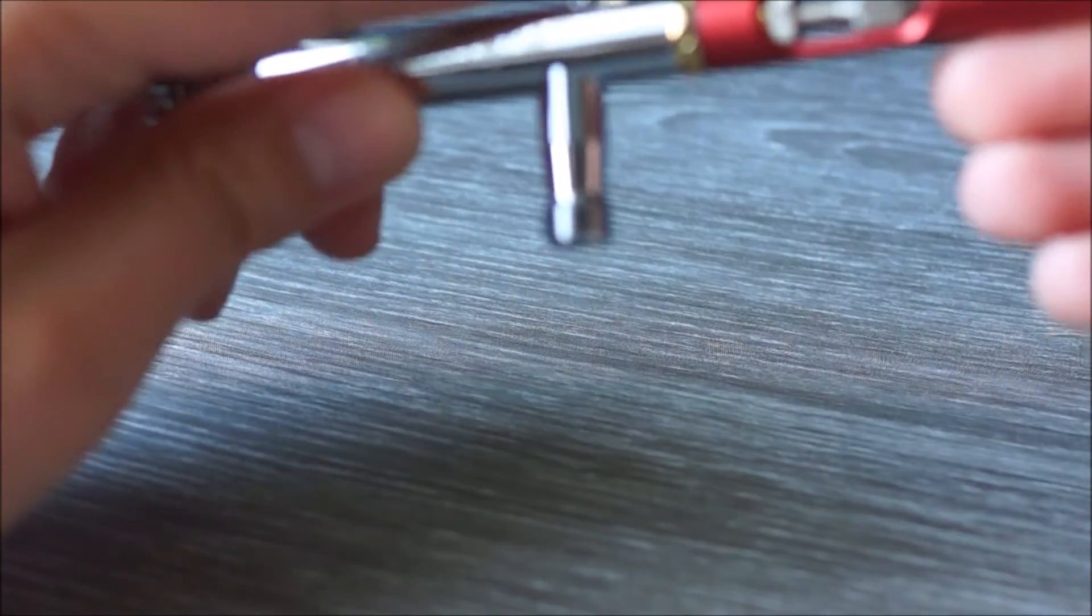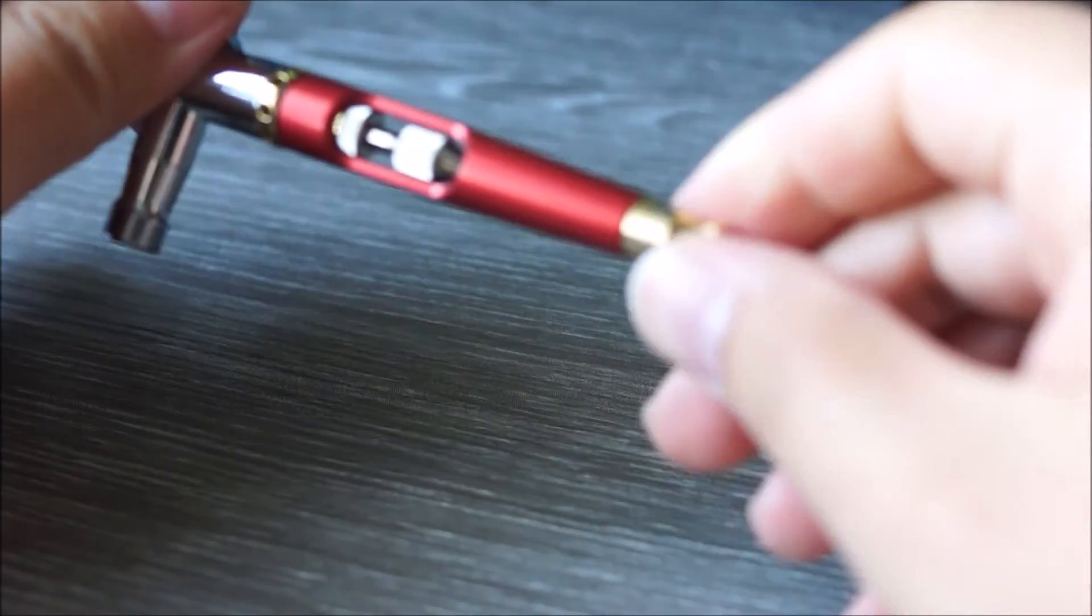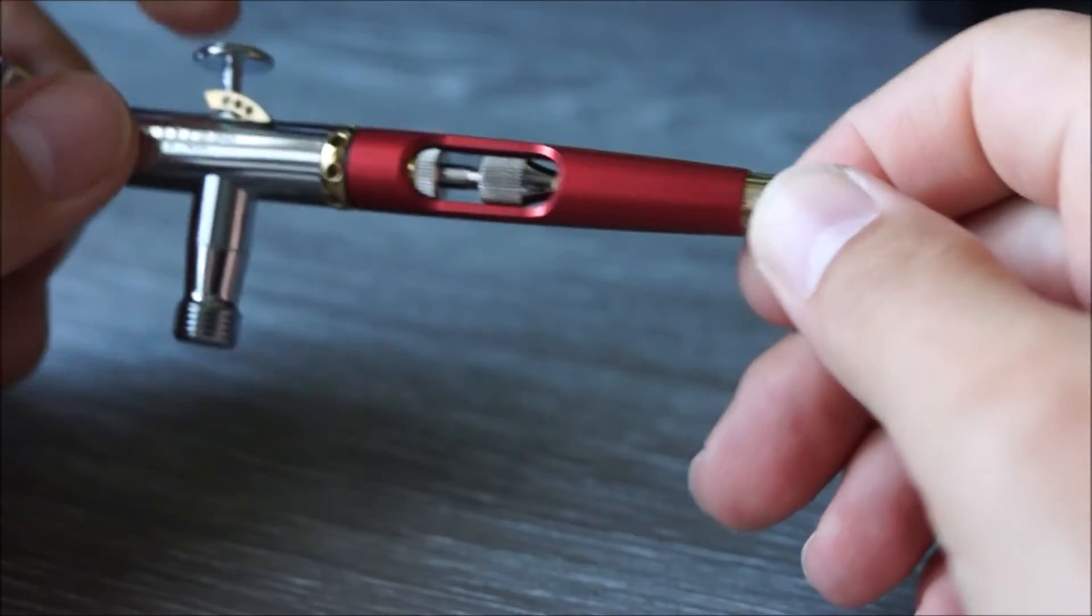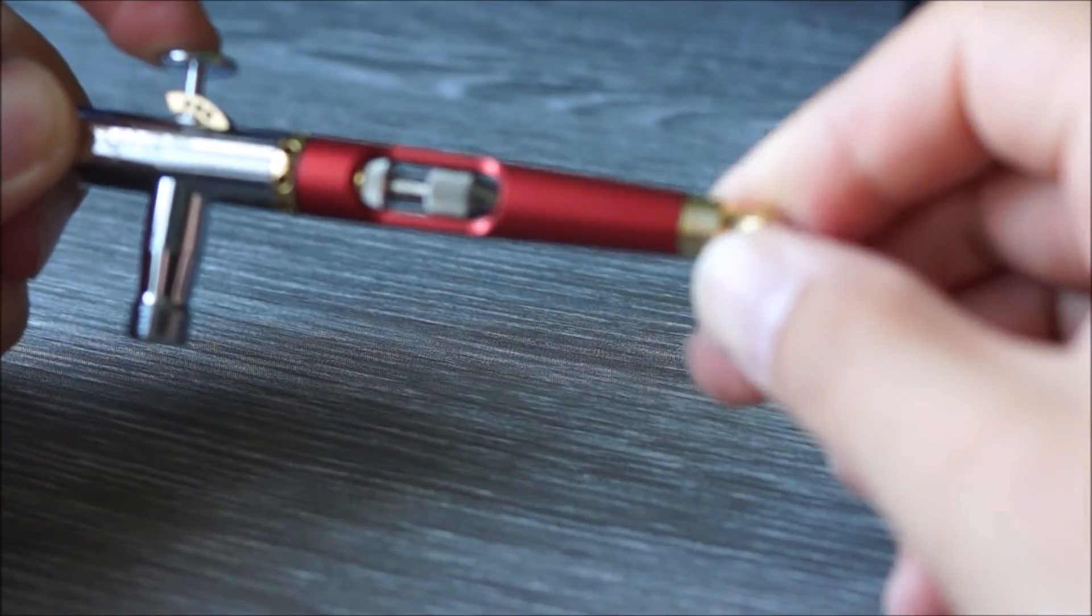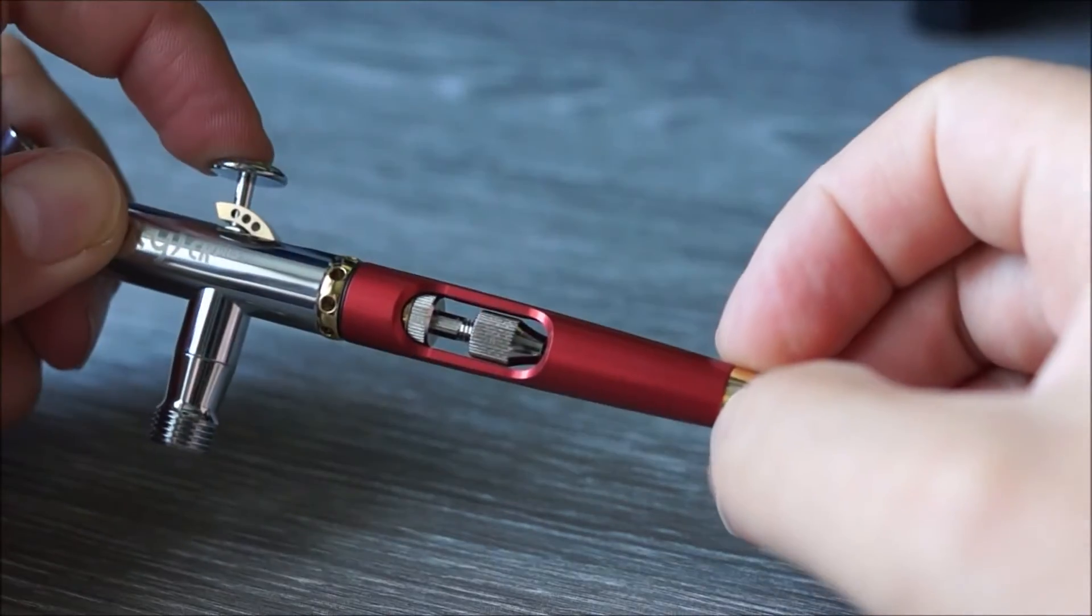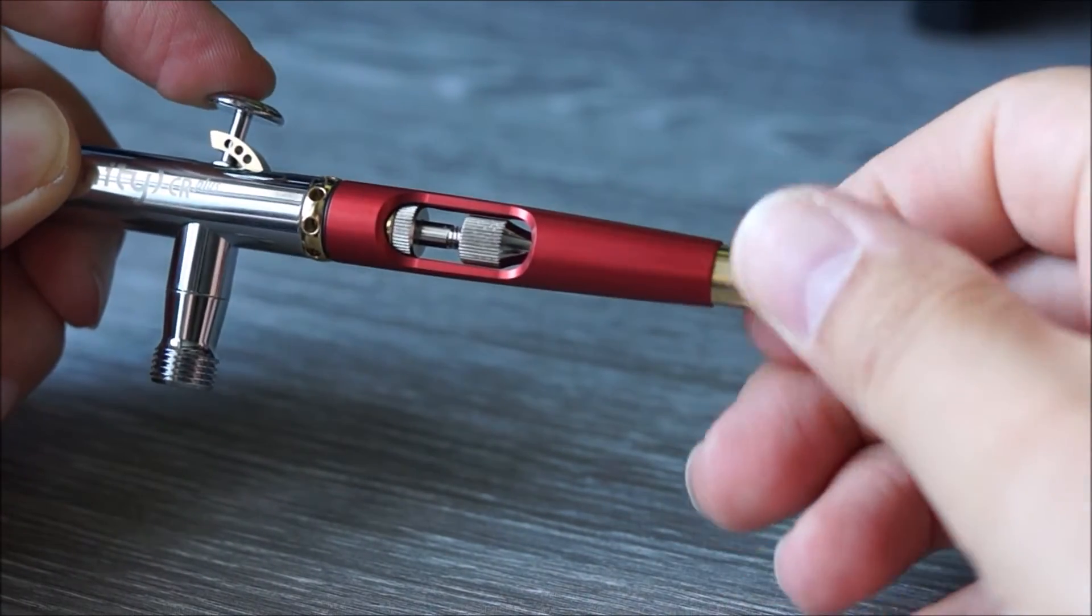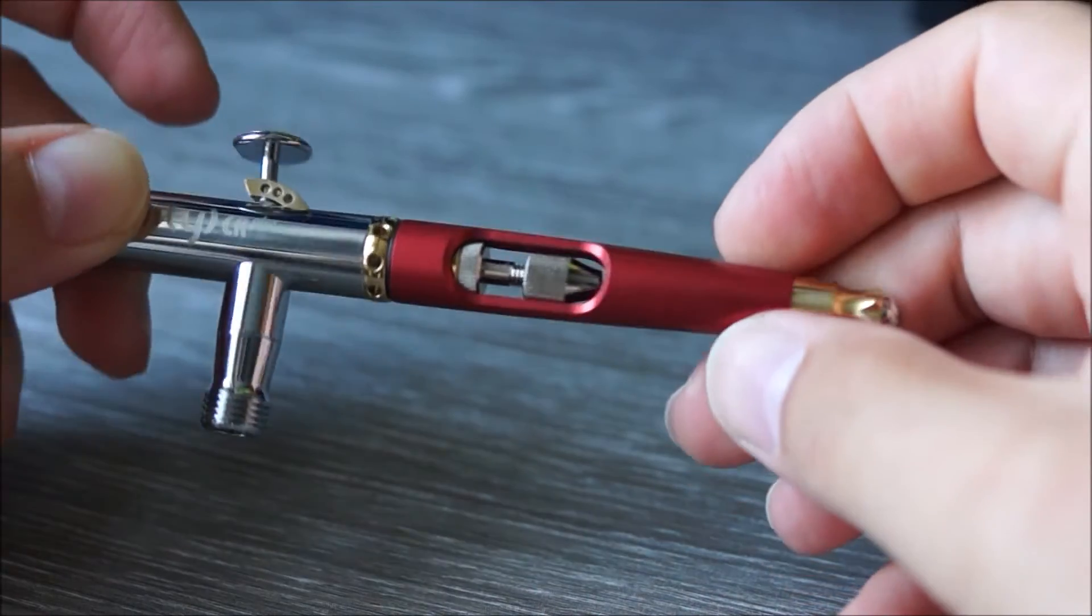Plus blokada, którą można sobie tutaj regulować. To jest ta blokada. Można sobie blokować, zablokować. Wielkość plamki można sobie w ten sposób regulować.